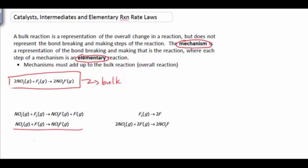Notice that the first step has the NO2 and the F2 reacting to form two species, and then one of those species from the first step is going to be used in the second step. In other words, it's created then used. So we can cancel that out. And in doing this we can see that our reaction becomes 2NO2 plus F2 goes to 2NO2F. And notice that matches our bulk reaction, so this is an acceptable mechanism for this bulk reaction.